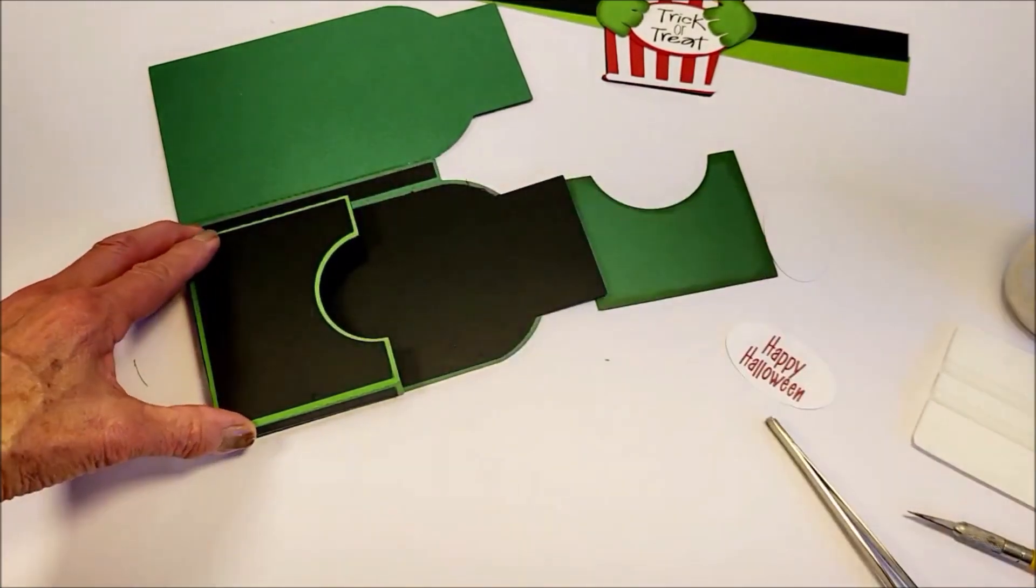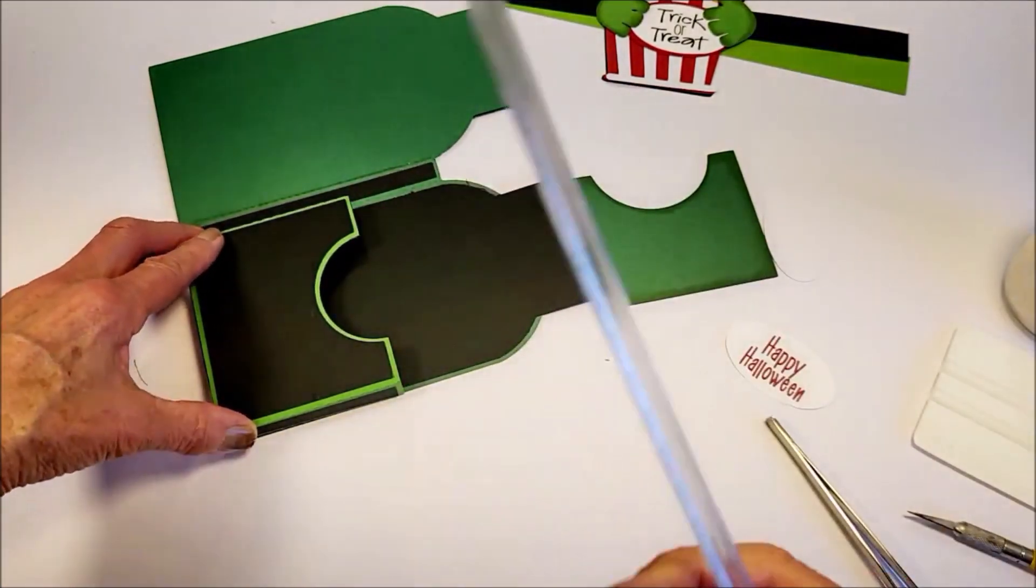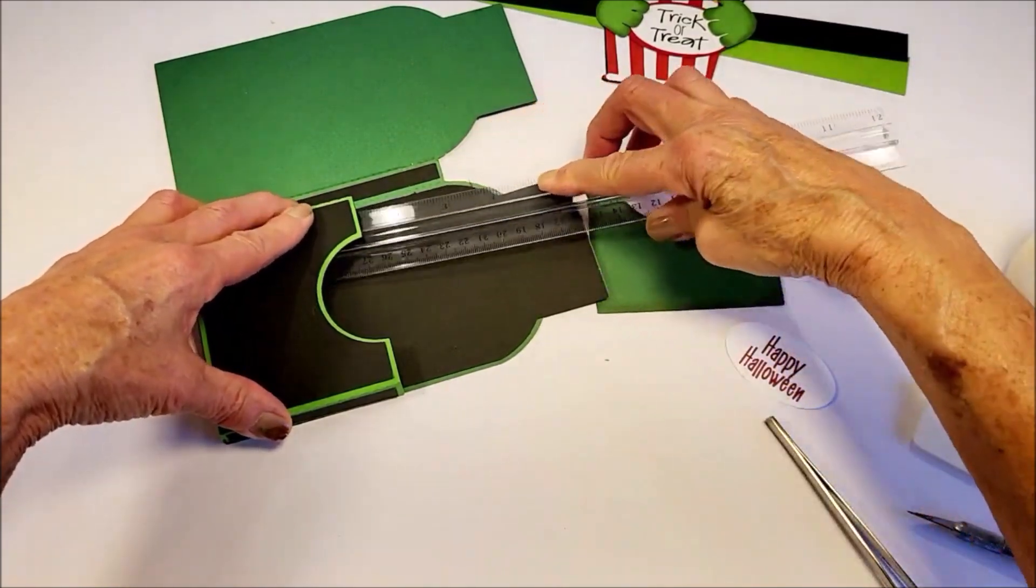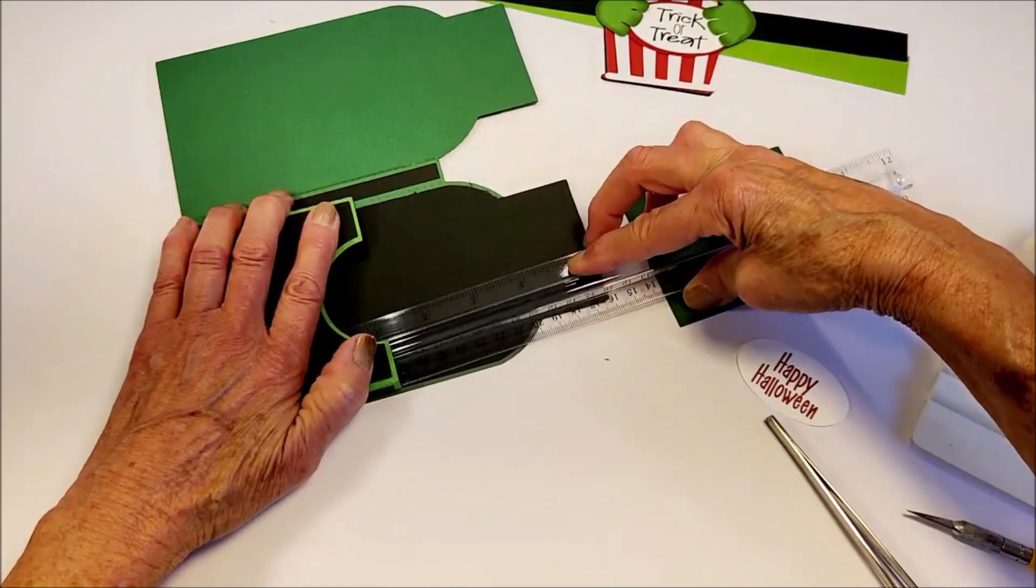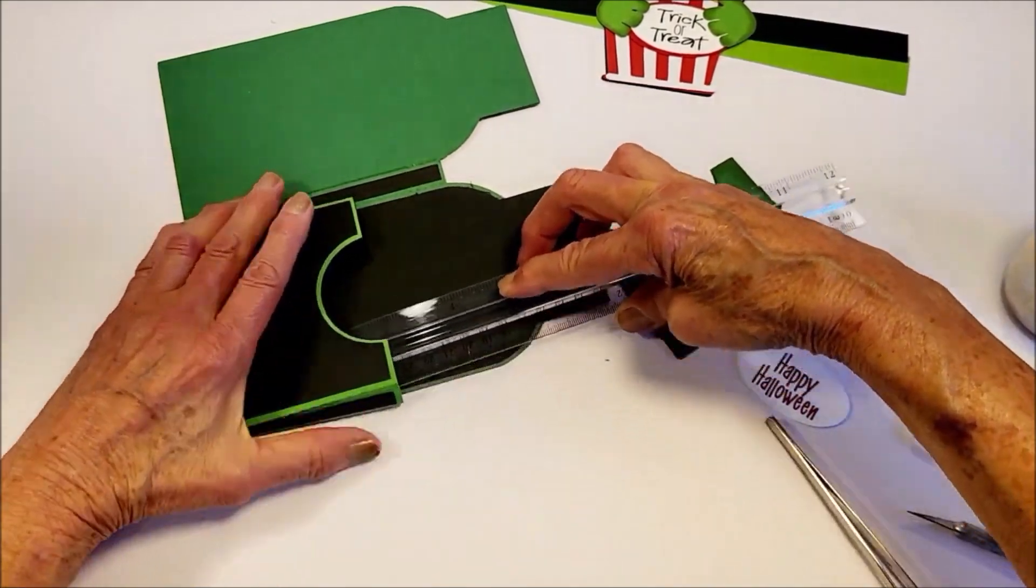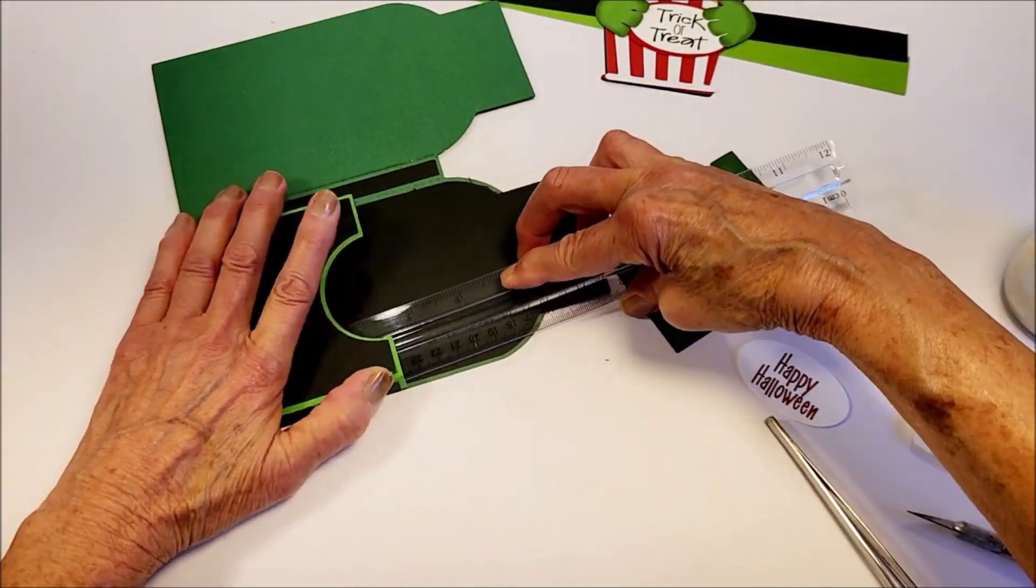And I found what makes it easier when I'm gluing this on is to take a ruler or flat object and run it along here to kind of press it down and hold the glue.